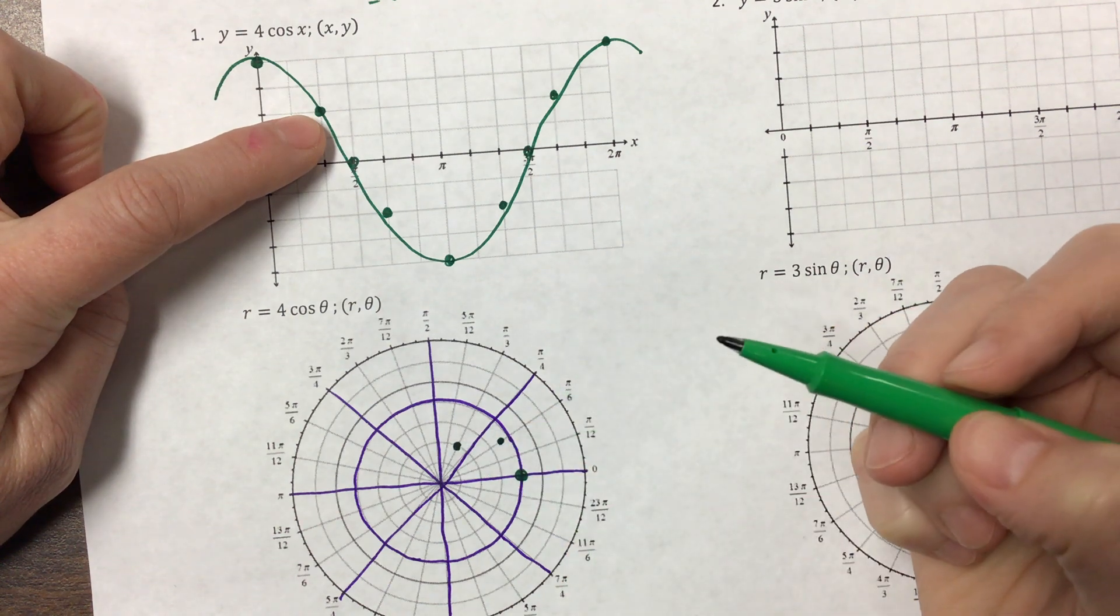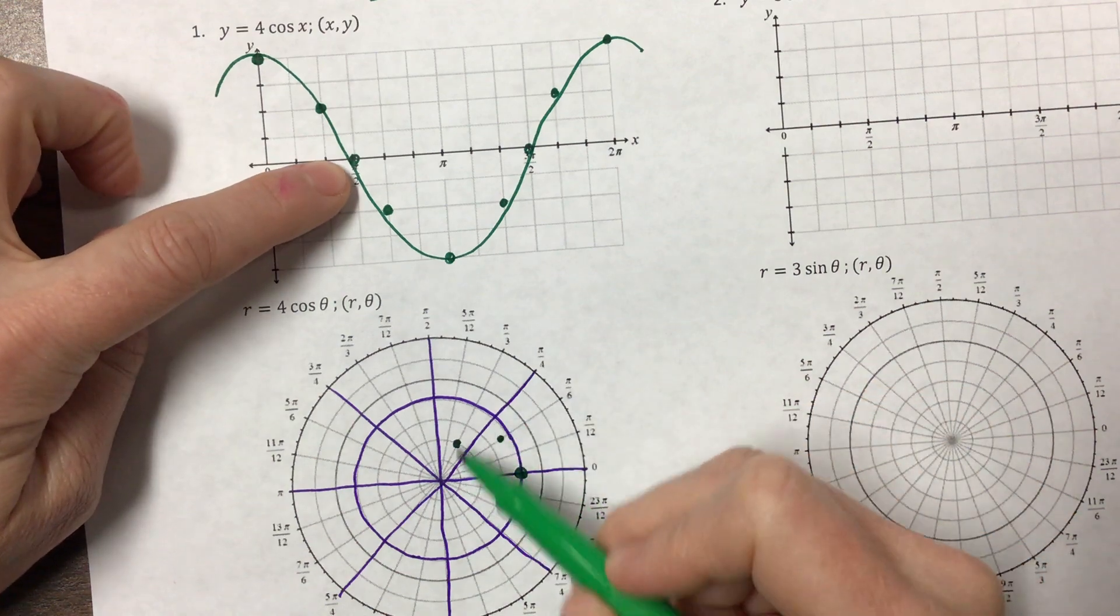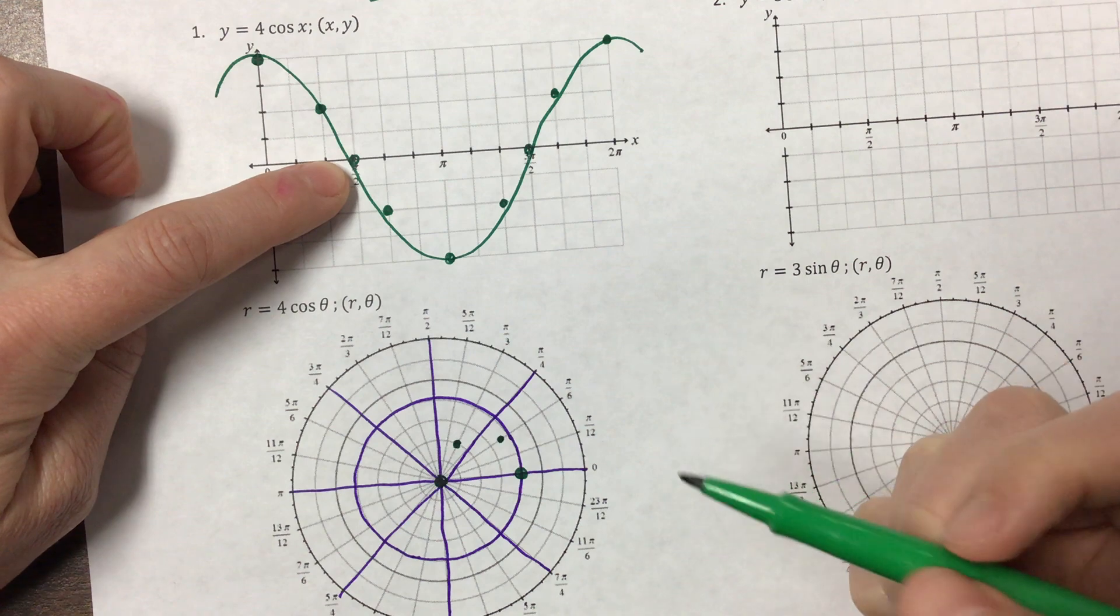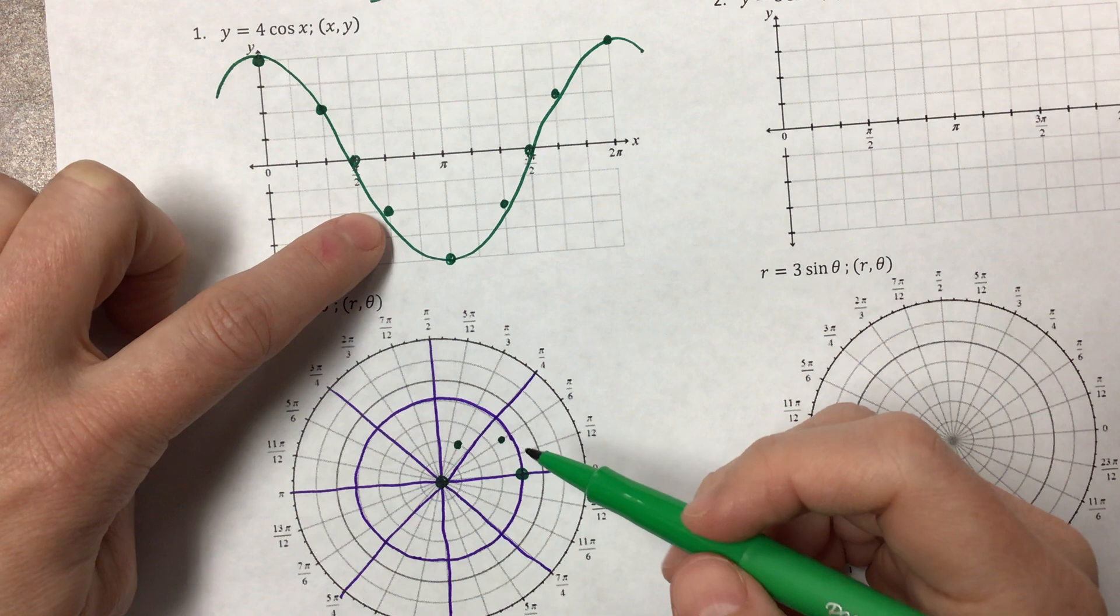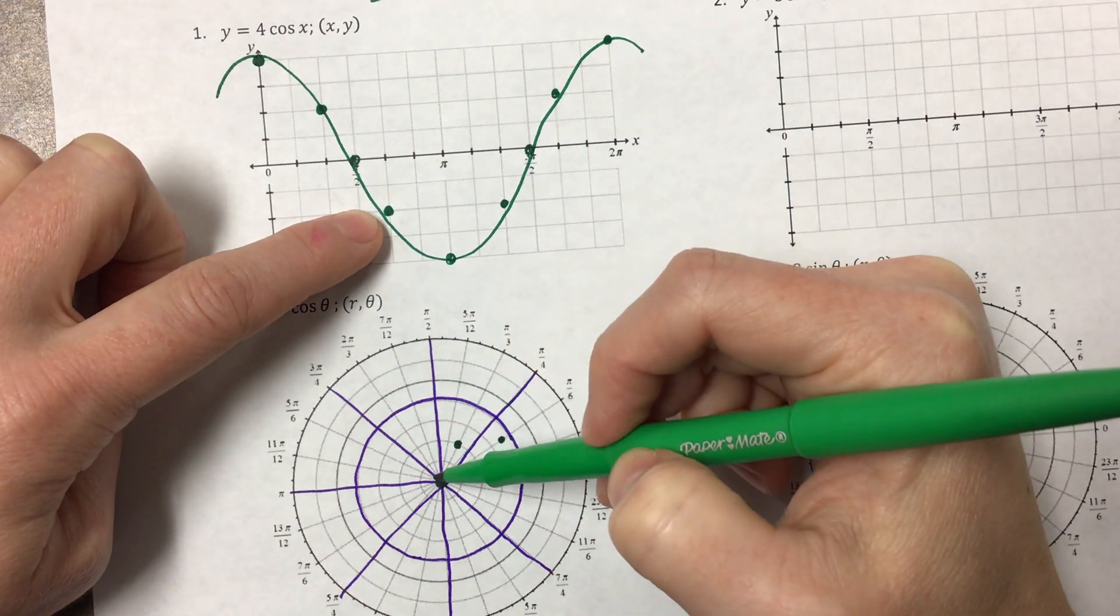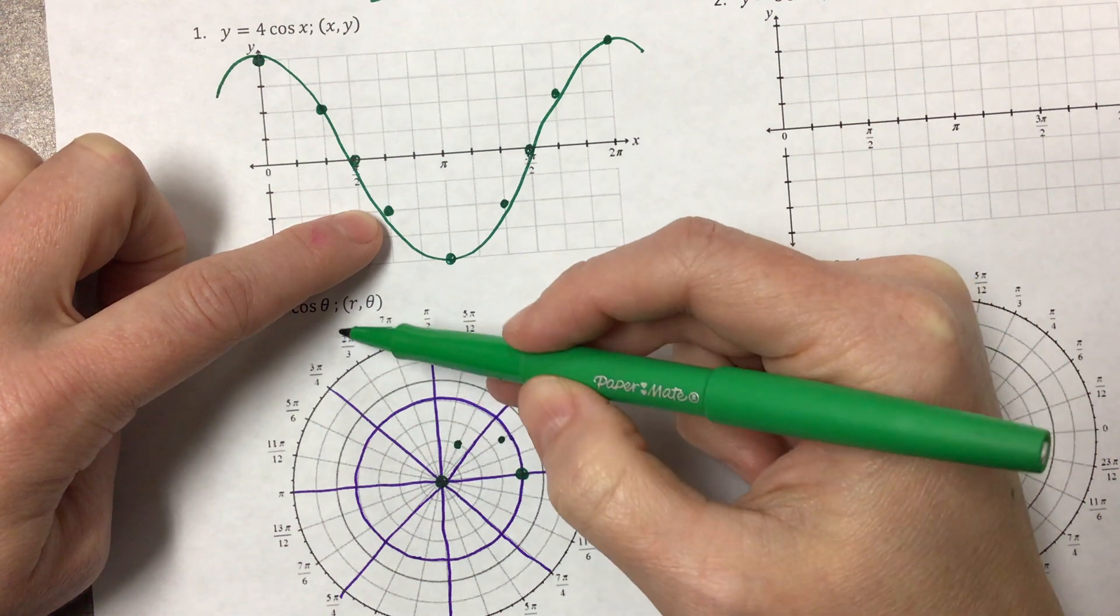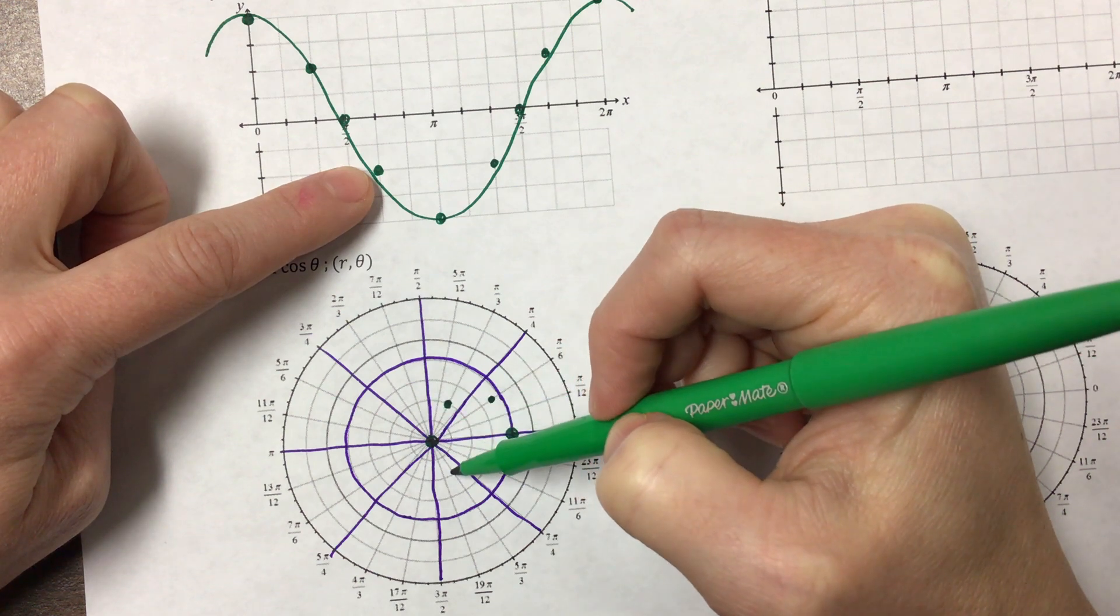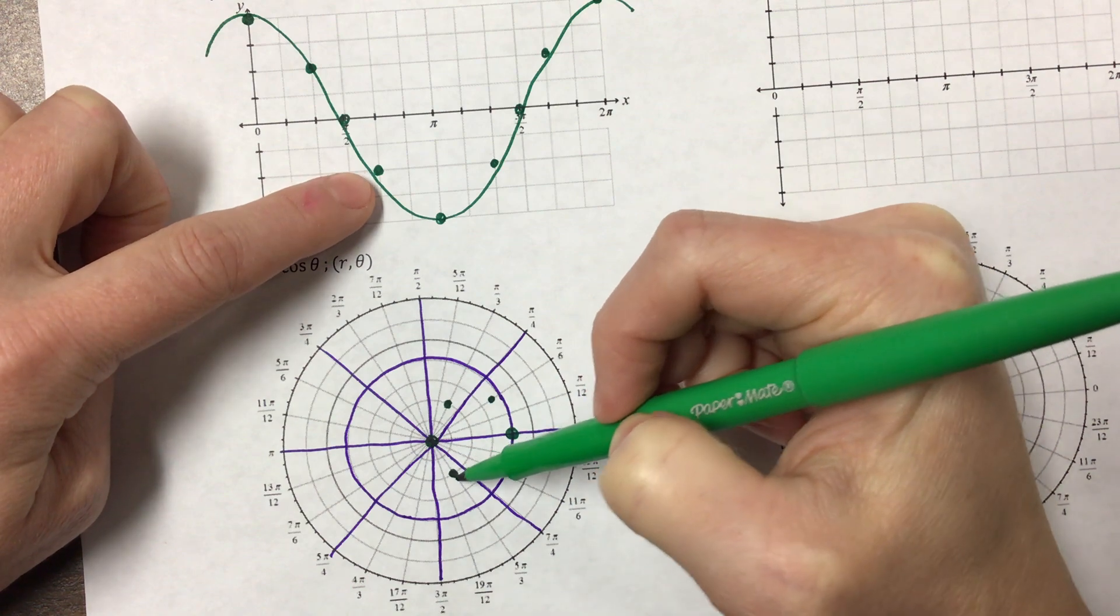And then at π/2, I went 0. So I'm right here at the origin, or the pole. And now when I get to 4π/6, or 2π/3, I'm going to turn around and go in a negative direction. So instead of coming out this way towards a positive 2π/3, I'm going to turn around and go in a negative direction. That negative 2 put me here.